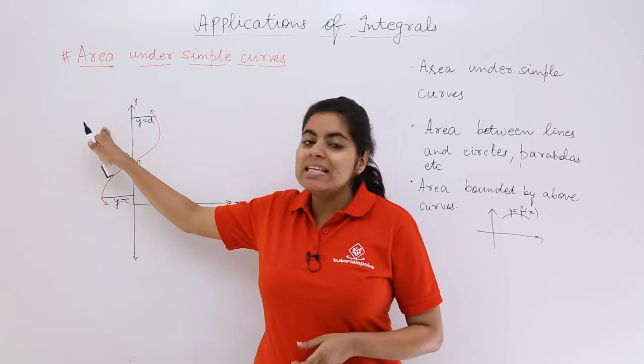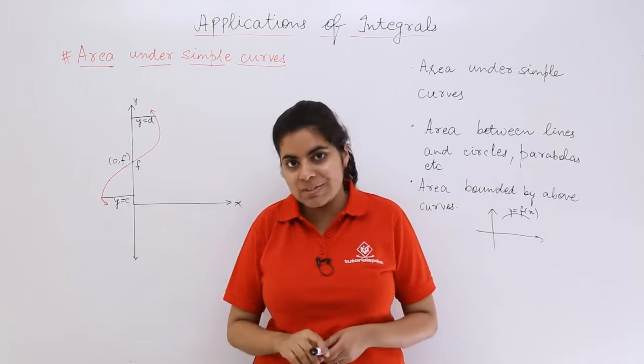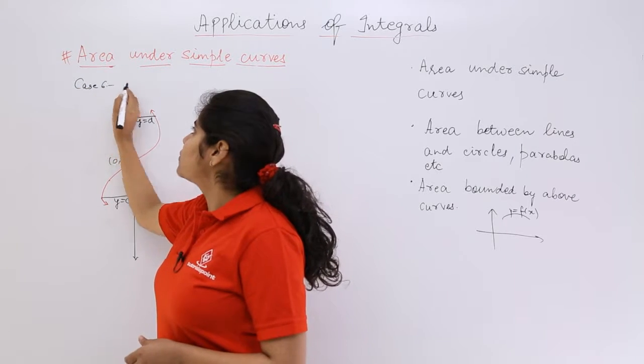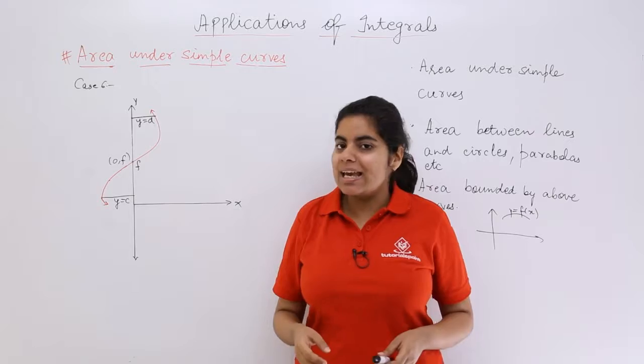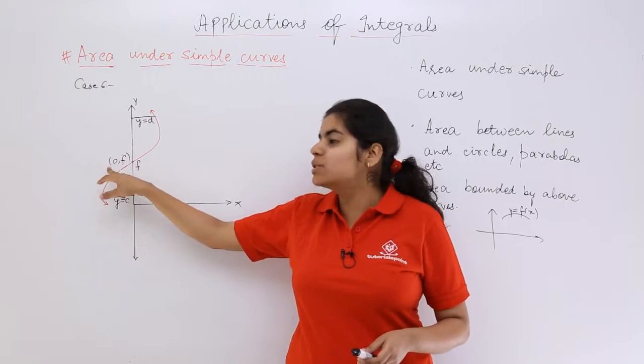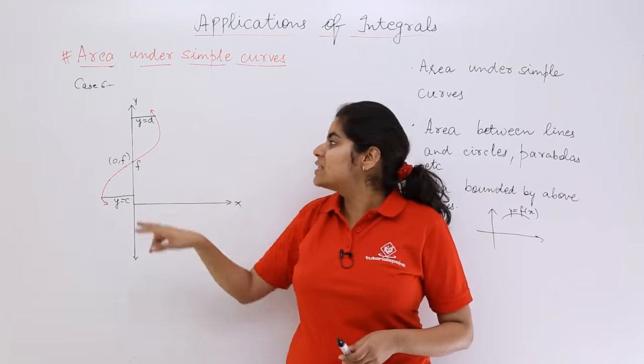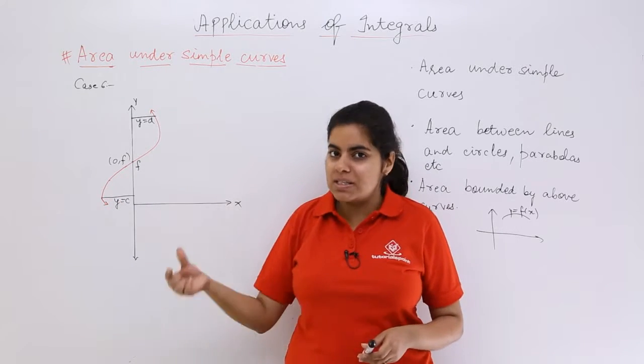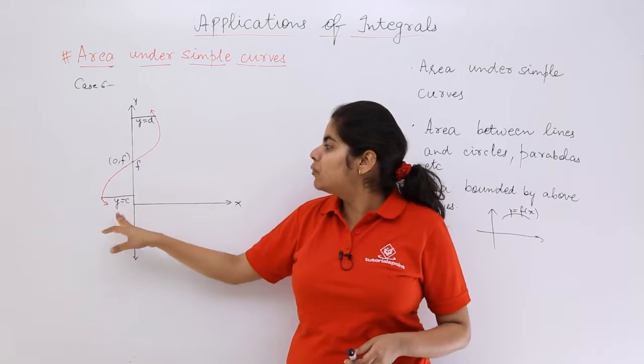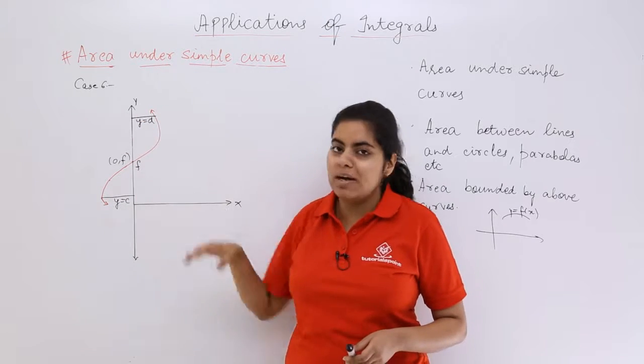Let's see this case. This is case number 6, and we have to see it in detail. This case says that the intersection of the curve is with a point on the y-axis. That means we have F (0, F) with the coordinate, and the curve goes from downward to upward, C to D, where y equals C and y equals D.